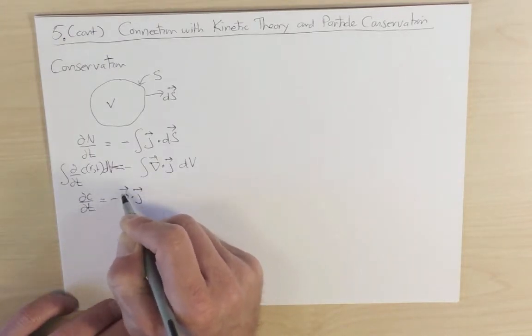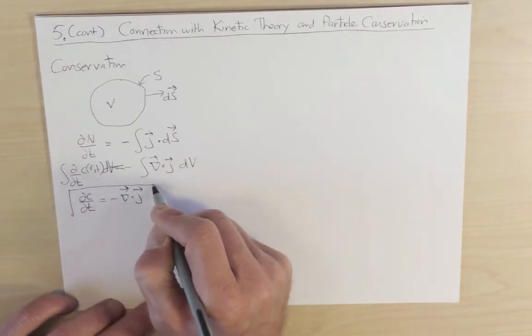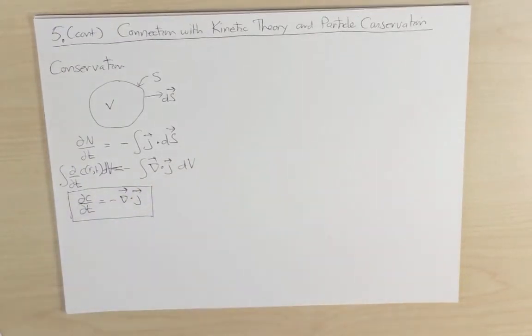So this thing is known as the continuity equation, and it's a starting point to actually derive the diffusion equation itself. So this is a statement of particle conservation.